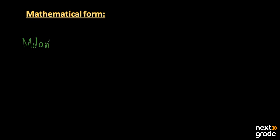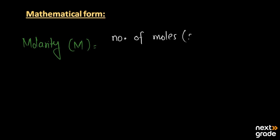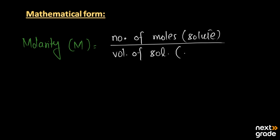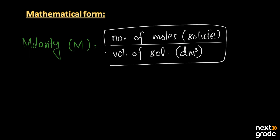Next we have the mathematical form for molarity. Molarity, denoted by capital M, is equal to the number of moles of solute divided by the volume of solution, and the volume of solution must be in decimeter cube (dm³).